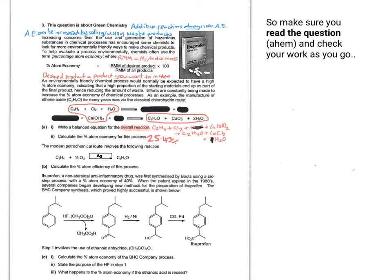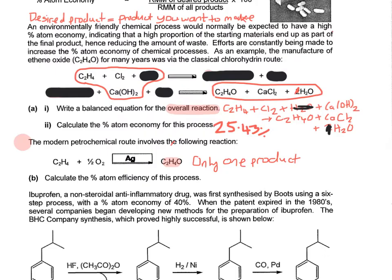OK, so let's move on. The modern petrochemical route involves the following reaction, C2H4 plus a half O2, with silver as a catalyst, making C2H4O. It looks a lot more straightforward, doesn't it? So I'm going to make the page back up to full size again. If we look at this version, there's only one product, so there's always going to be 100% atom efficiency. So this doesn't really need to be calculated at all. It could just be deduced.